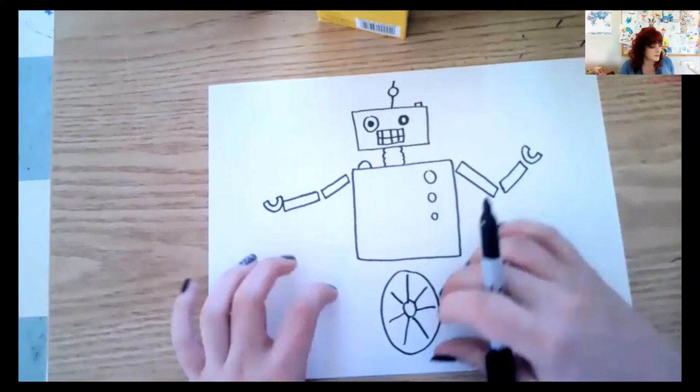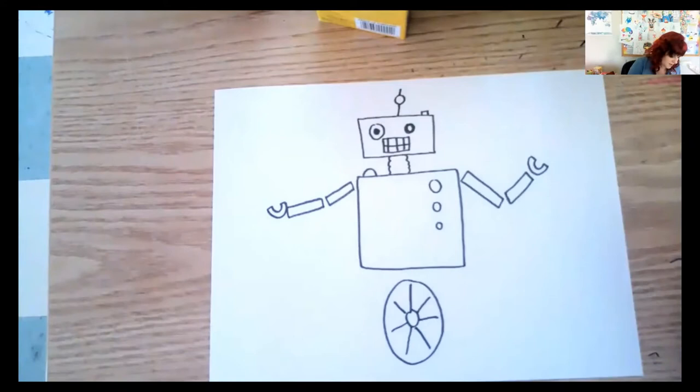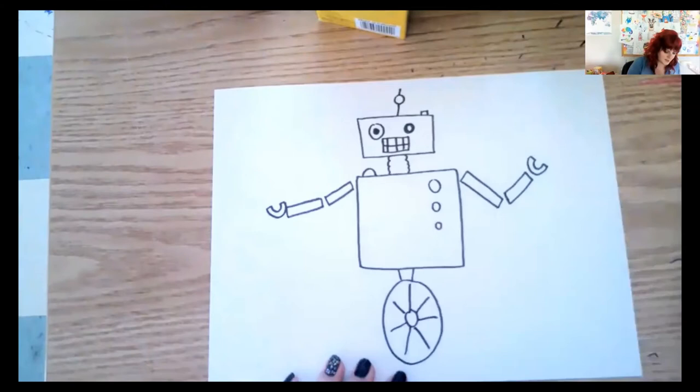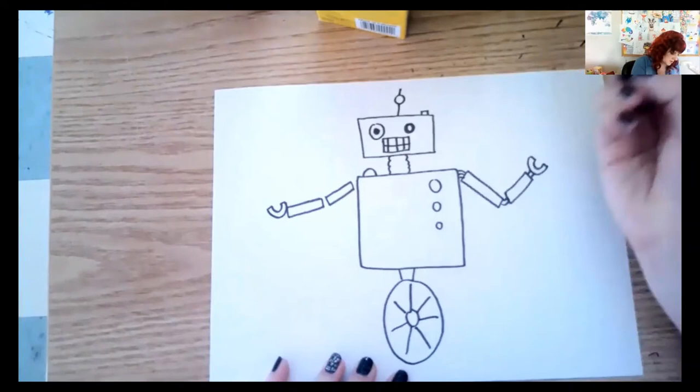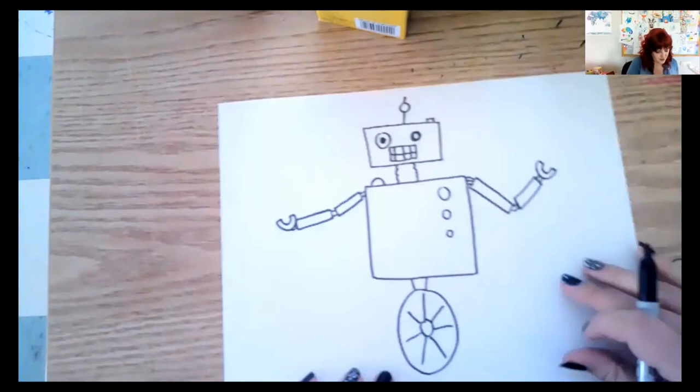And don't forget, if you're following along with me and you're doing the exact same thing, you can absolutely pause this as often as you need to, or you can just use this as inspiration and do your own kind of robot that looks any way that you want it to. All right. And I'm going to do some little tubes here to connect everything, some little wires. That's what makes his arms move.